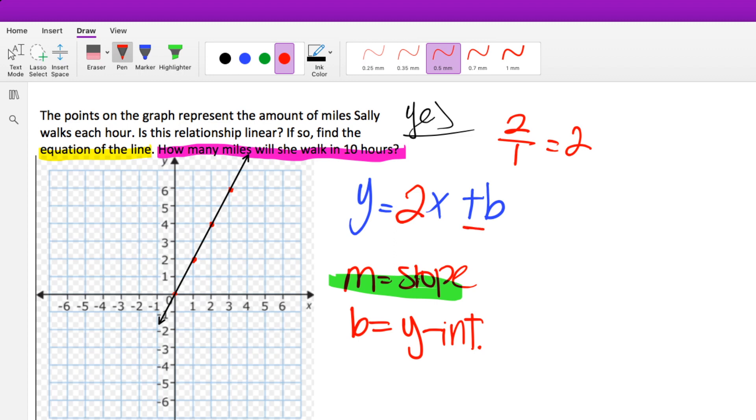And then we see a B as well. What do we know about B? B is the Y-intercept. And to find B, we just need to look at our graph and see where does the line hit the Y-axis? And we see that it hits it right here at 0, 0. So, we can simply just put, I'm going to delete some stuff here. So, we can either write Y equals 2X plus 0, or you can just leave it as Y equals 2X.